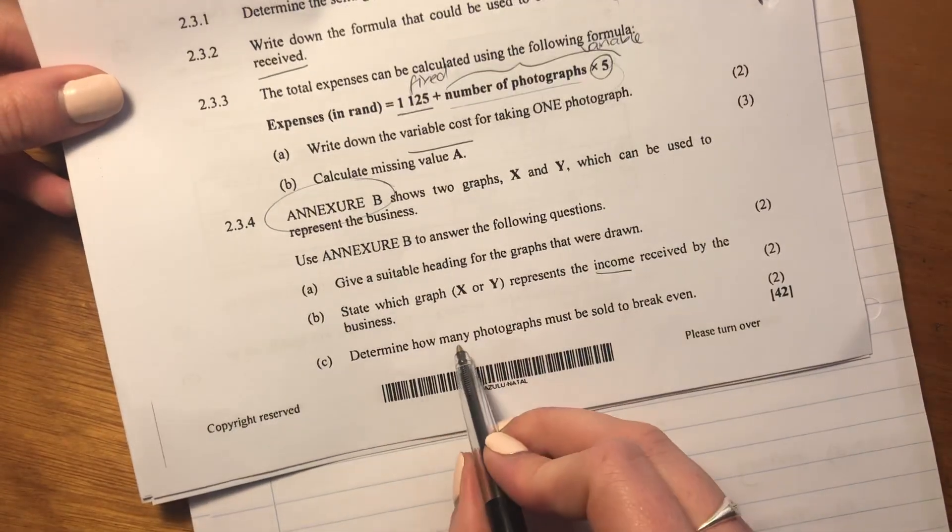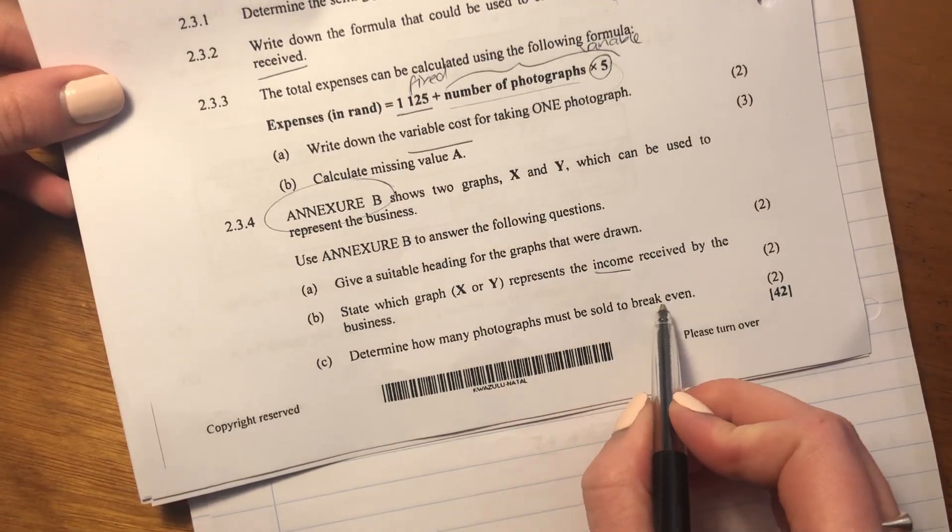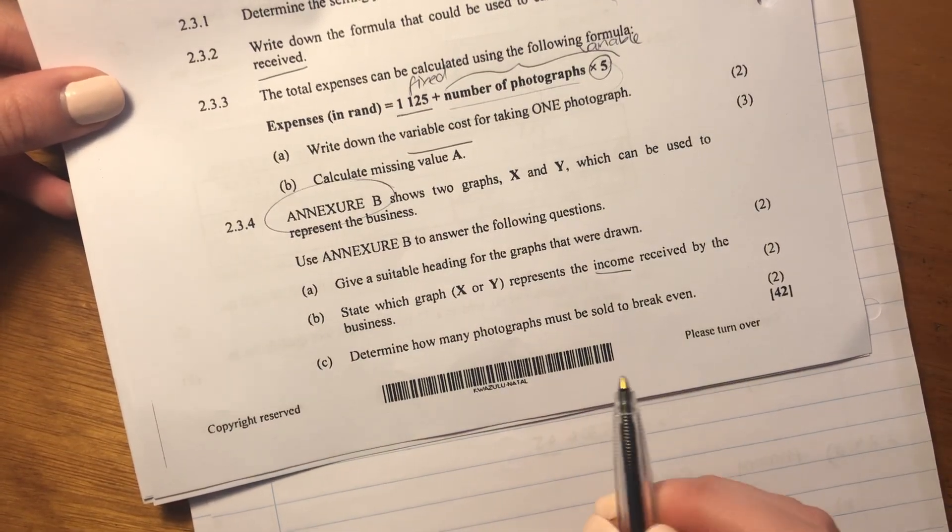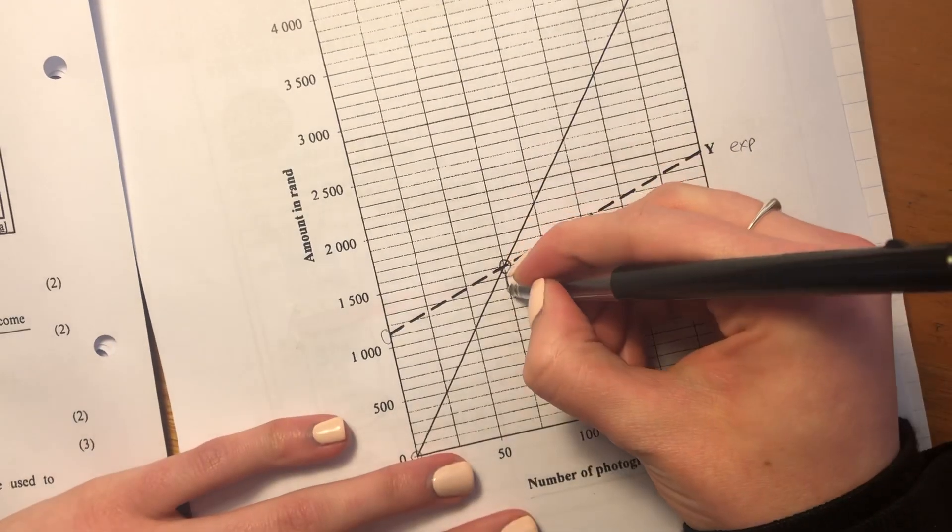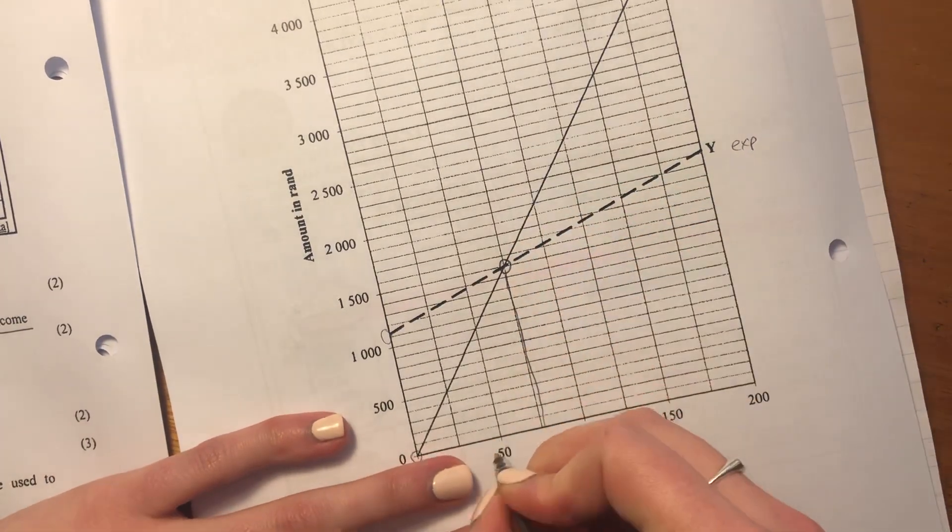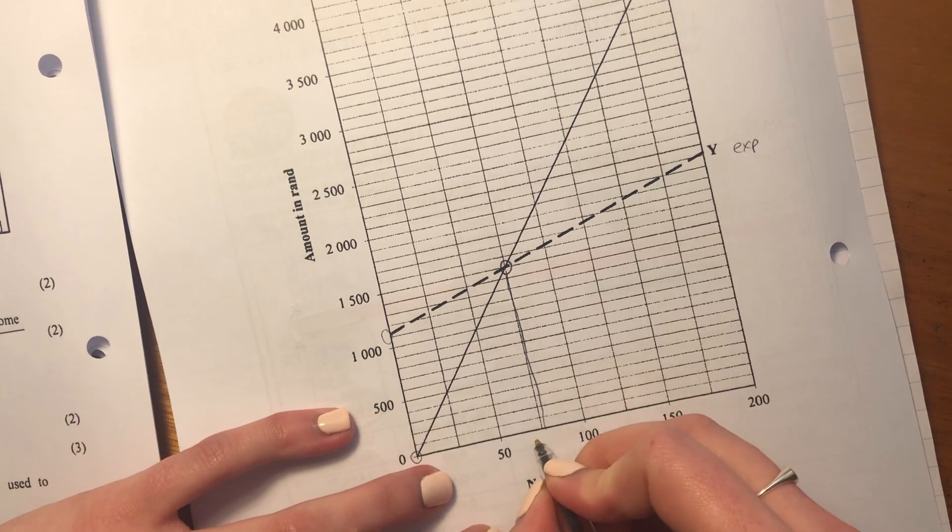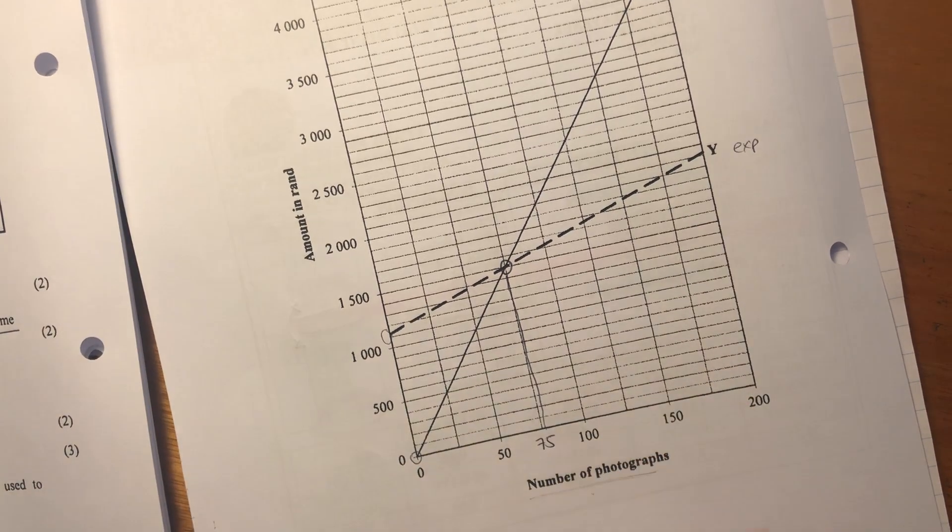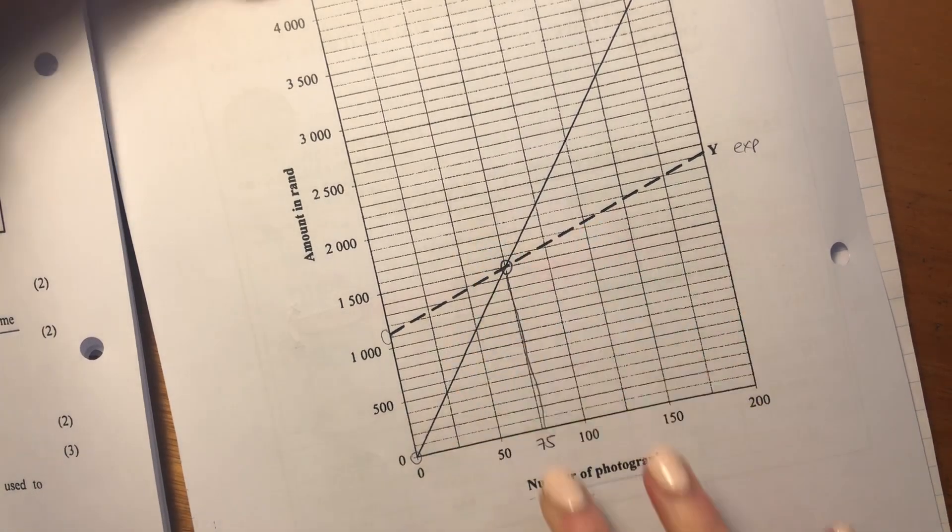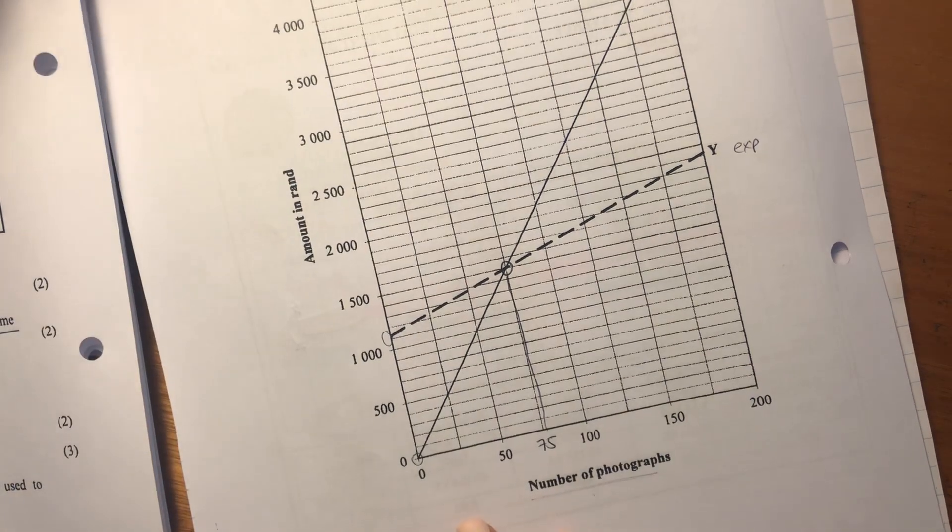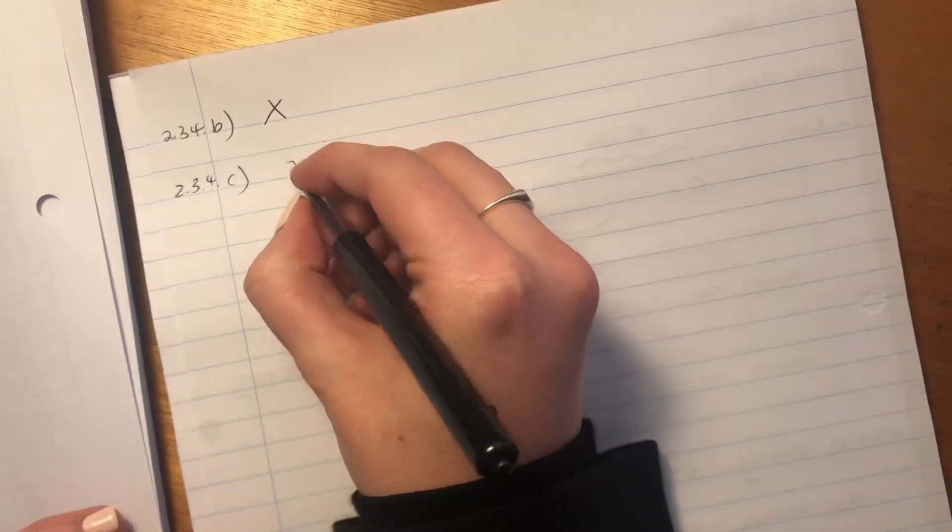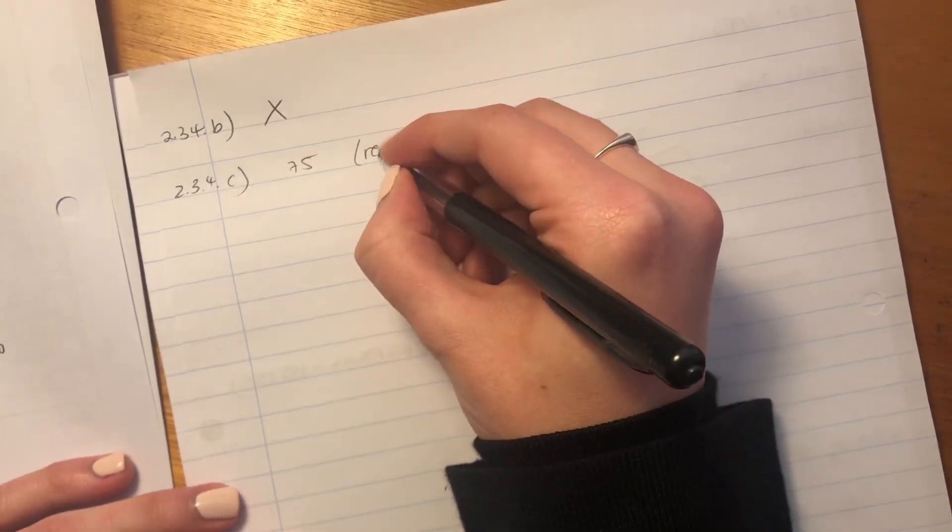Then let's go to the last question for this overall question. It says, determine how many photographs must be sold to break even. So you can just read that off the graph. So at this point, it's between 50, bang in the middle, between 50 and 100, which is 75. You can read it off. You can also calculate it. I'm going to show you both ways. So I'm going to say 75 because I read it off the graph.